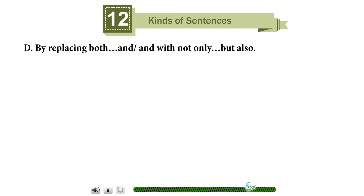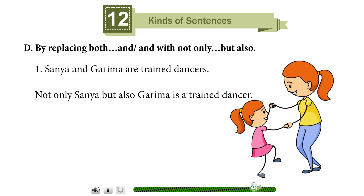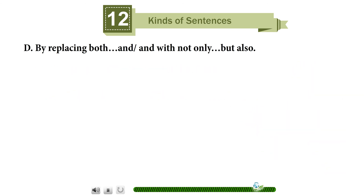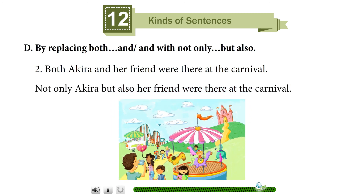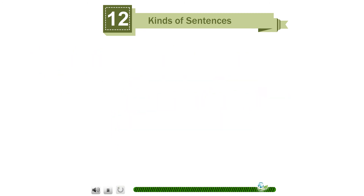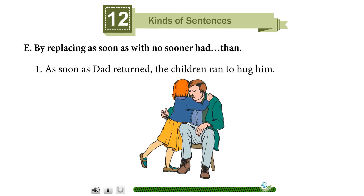Method D: by replacing 'both...and' with 'not only...but also.' Example: 'Sanya and Karma are trained dancers' becomes 'Not only Sanya but also Karma is a trained dancer.' 'Both Akira and her friend were there at the carnival' becomes 'Not only Akira but also her friend were there at the carnival.'